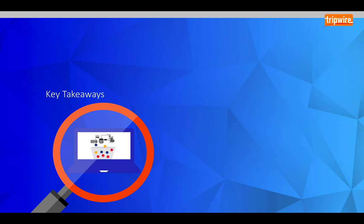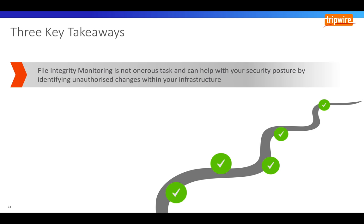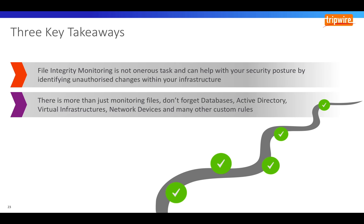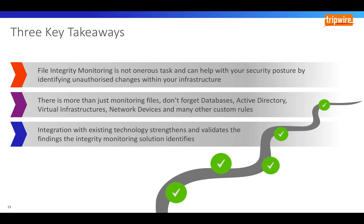Let me discuss some key takeaways from today. We covered the misconceptions of file integrity monitoring and shown that it does not have to be an onerous task and can help reduce risk within your infrastructure. There's so much more than just monitoring files — we've shown that databases, Active Directory, virtual infrastructures, and network devices have changes that can significantly cause disruption to your environment if malicious. And don't forget the all-powerful command output capture rules, which expands the capability in detecting changes to other applications and platforms. Finally, integrating with other technologies such as change management solutions and threat integration provides rich context and validation to the changes discovered.